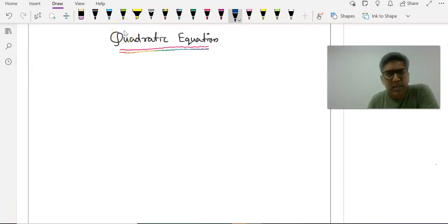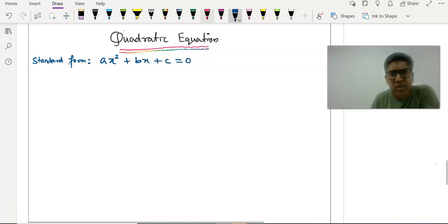Hello everyone, in this session we will be solving quadratic equations by completing the squares. The standard form of quadratic is ax² + bx + c = 0.